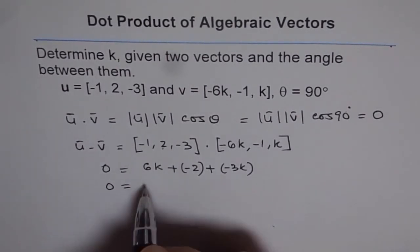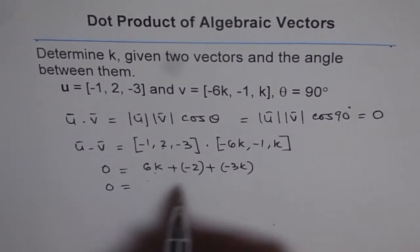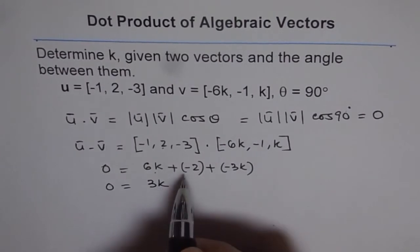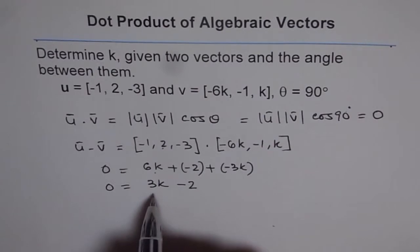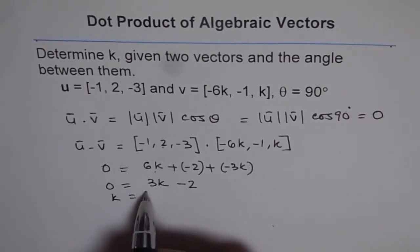We have 6k - 3k = 3k, and -2. Rearranging, we get k = 2/3.